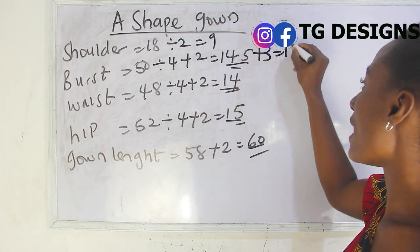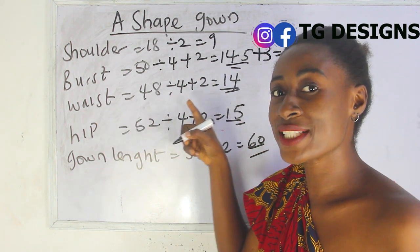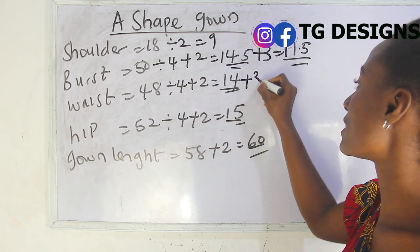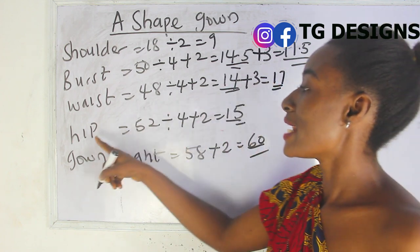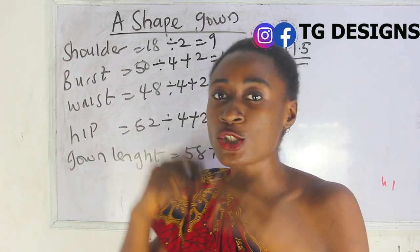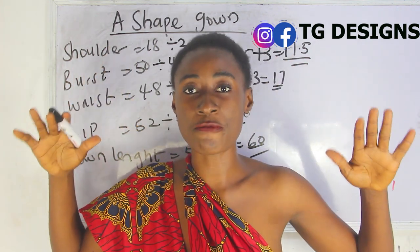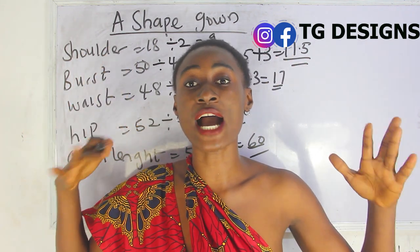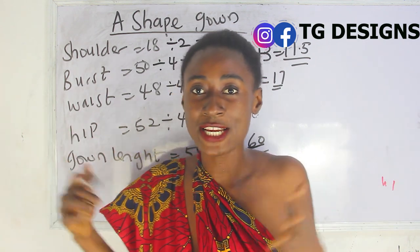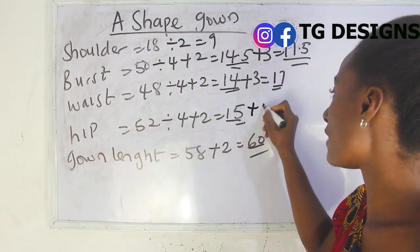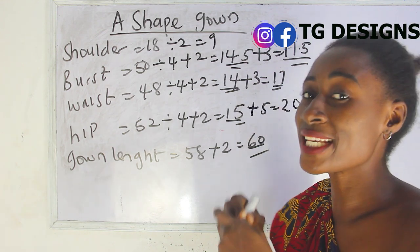I'm going to add inches to my measurements. My bust measurement is 14.5 — I'm adding 3 inches, so I now have 17.5. For my waist, 14 plus 3 gives me 17 inches. For my hip area, because it needs to be big to give that A-shape effect, I'm adding 5 inches — so 15 plus 5 gives me 20 inches.